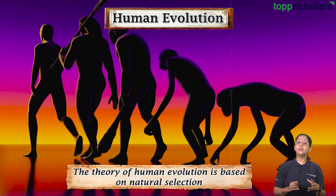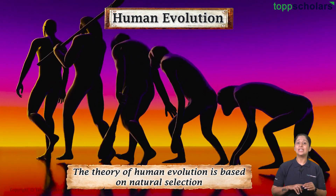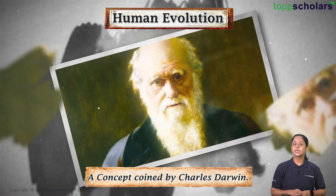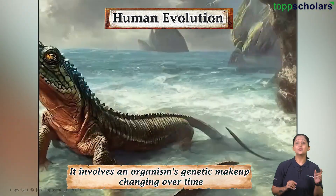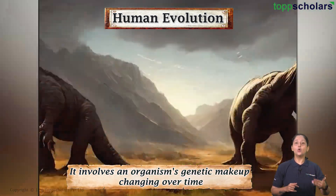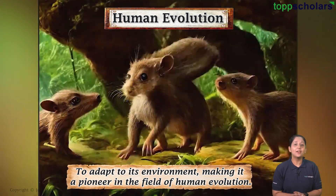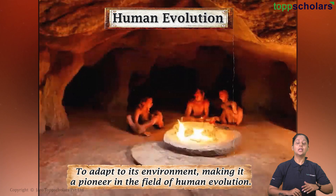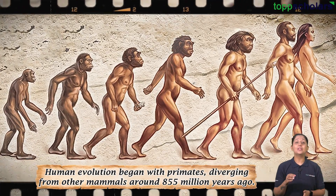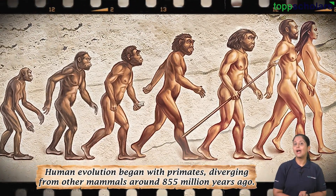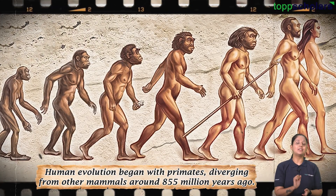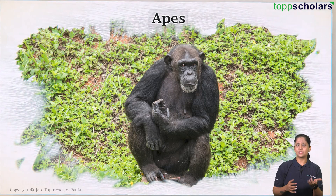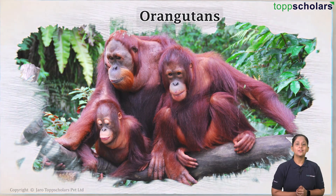The theory of human evolution is based on natural selection, a concept coined by Charles Darwin, which involves an organism's genetic makeup changing over time to adapt to its environment, making him a pioneer in human evolution. Human evolution began with primates diverging from other mammals around 85 million years ago.